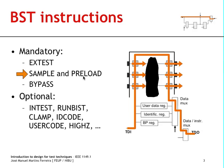Sample and preload are currently two different instructions, but in the beginning they were one single instruction called sample/preload. These two instructions are actually very similar: they both select the boundary scan register and the boundary scan cells are placed in a transparent mode, so the output multiplexer will be connected as shown here. Sample addresses the capture of the values present at the input pins, and preload addresses, as the name indicates, the preloading of a test pattern into the output cells.